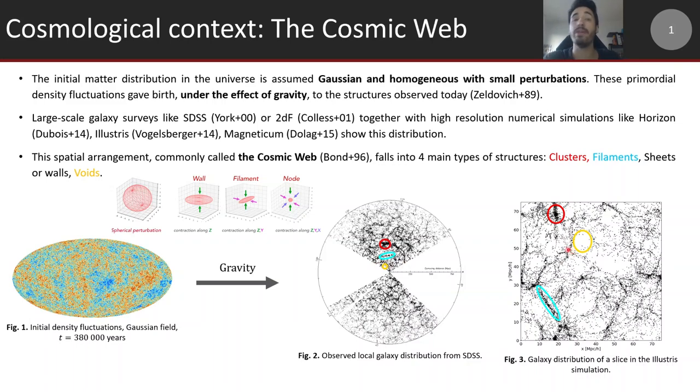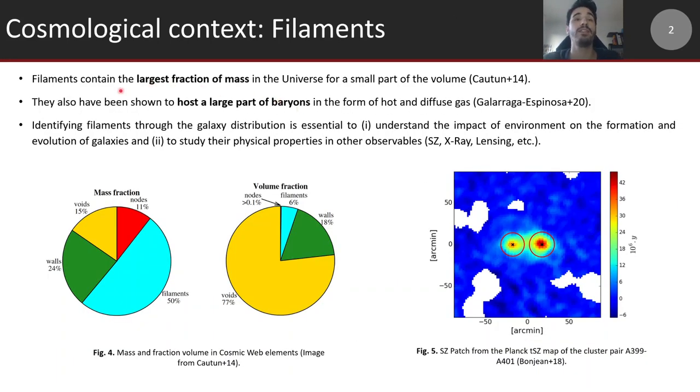In this talk we'll mainly focus on filament objects since they are very interesting from a cosmological point of view. They contain the largest fraction of the mass of the universe for a very small part of the volume, almost only 6% of the volume fraction for almost 50% of the mass fraction. Recently they've also been shown to host a large part of the baryons in the form of hot and diffuse gas that you can observe in the Sunyaev-Zel'dovich maps of the Planck survey. Here you have two clusters linked together by an overdense signal that has been observed in simulations and observations.